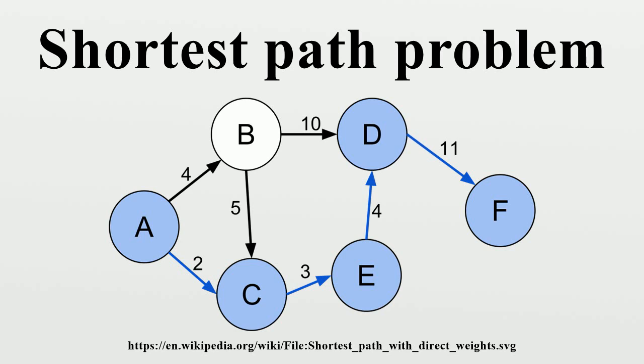The single destination shortest path problem in which we have to find shortest paths from all vertices in the directed graph to a single destination vertex v. This can be reduced to a single source shortest path problem by reversing the arcs in the directed graph.